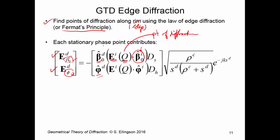Note the superscript I for incident and D for diffracted. We have two ray-fixed coordinate systems: one attached to the incident ray, used to determine contributions incident on the point of diffraction, and one attached to the diffracted ray, used to compute the diffracted field components. You apply a diffraction coefficient — D sub S and D sub H — where S and H stand for soft and hard. Those terms come from acoustics, since much of the early work in diffraction was done in acoustics. This here is a geometrical optics spread factor.